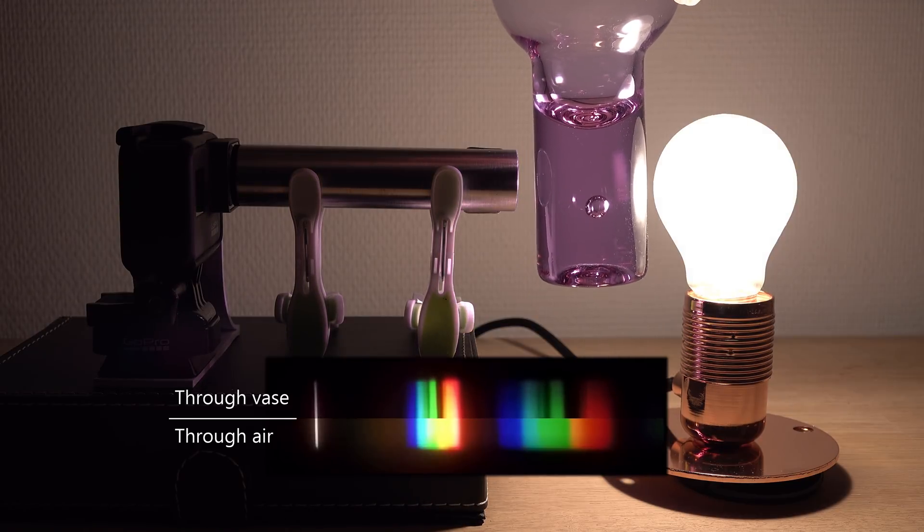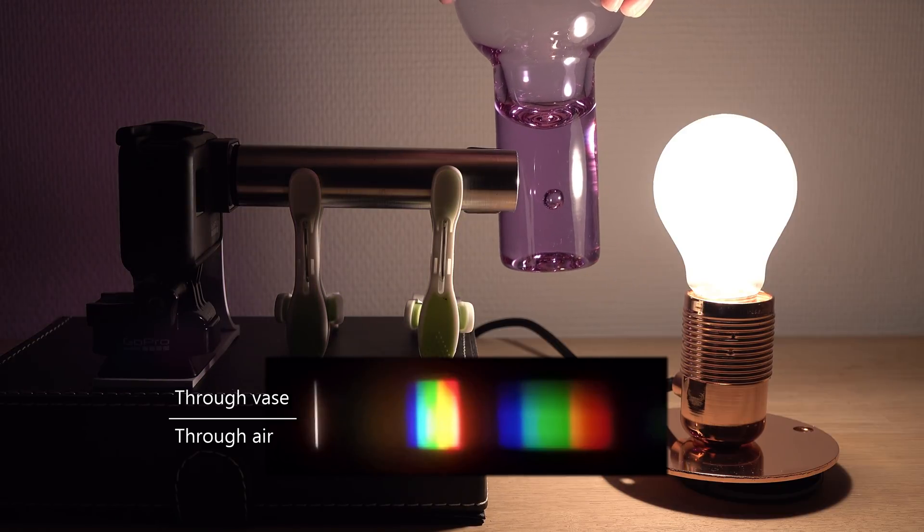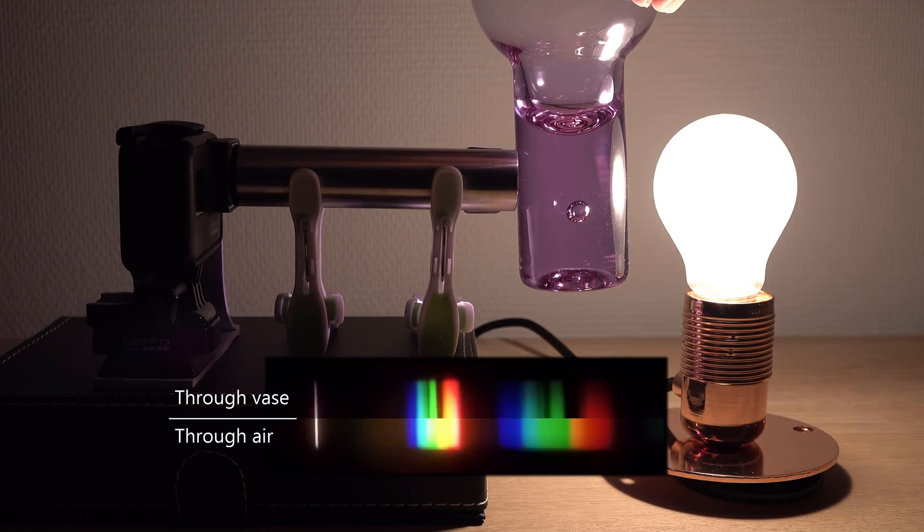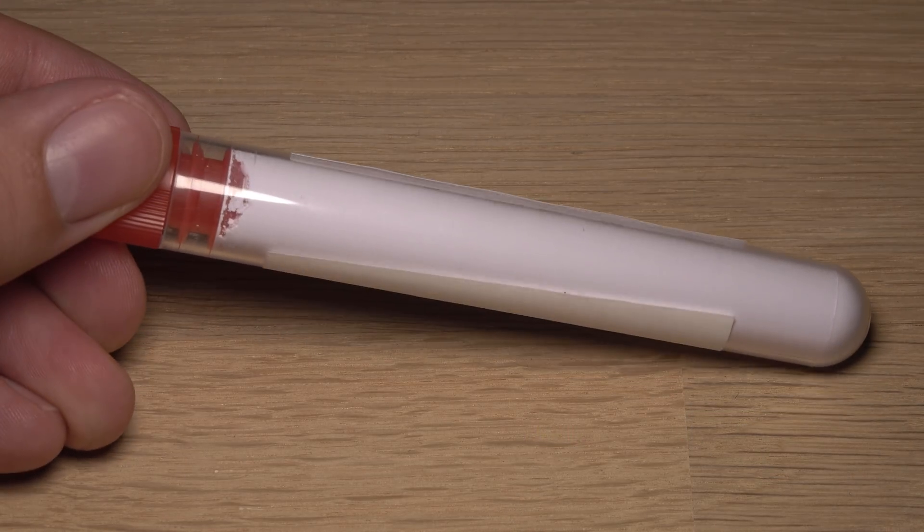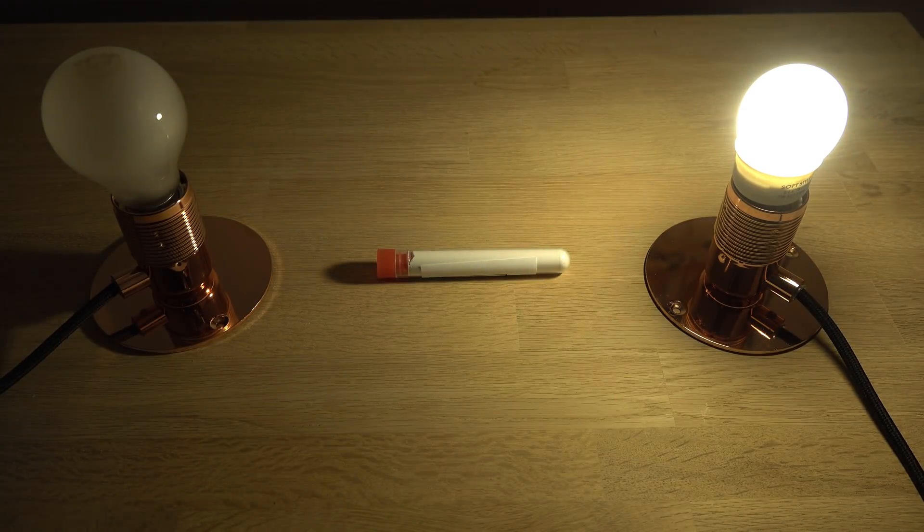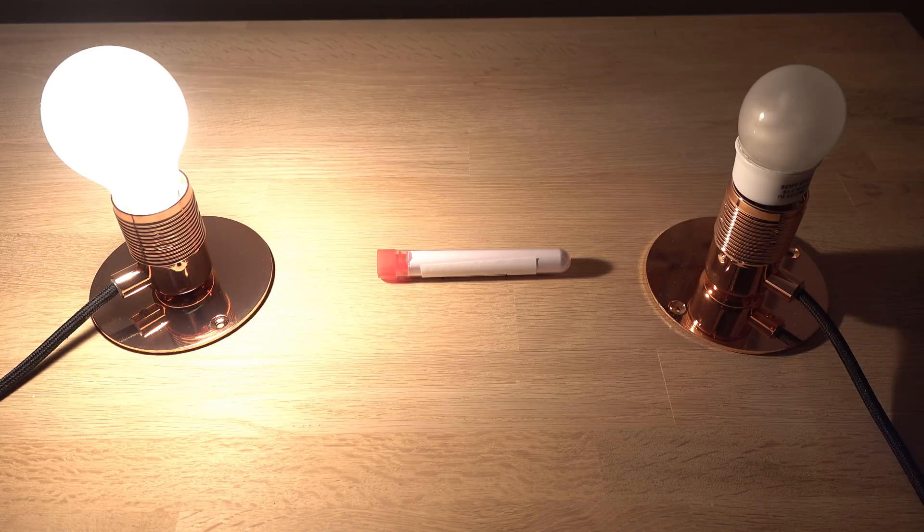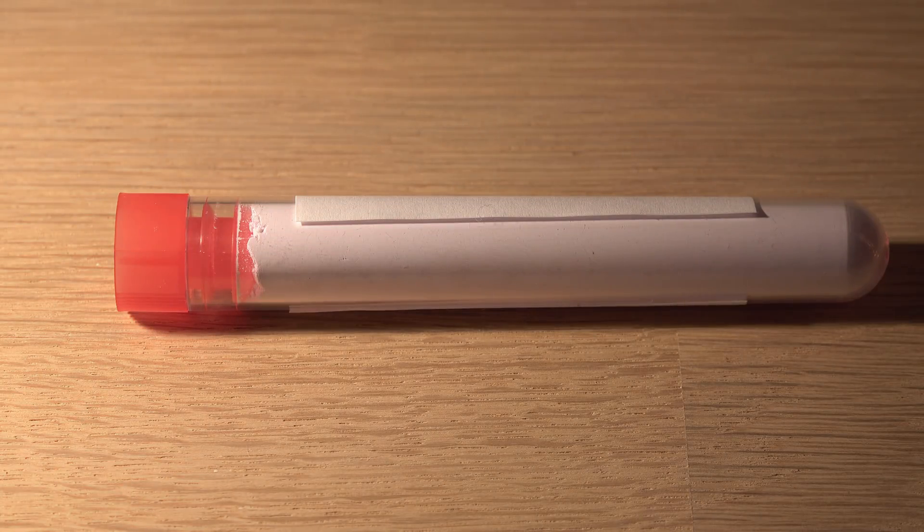But what is causing this absorption of colors in the vase? Well the vase is made of neodymium glass often called alexandrite glass. It contains neodymium oxide which I have a sample of here. The neodymium metal ions in this are absorbing the yellow light. It's not a strong effect in opaque powder form but hopefully you can see it.